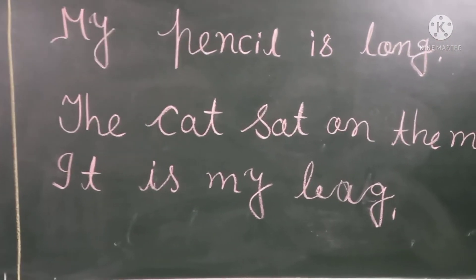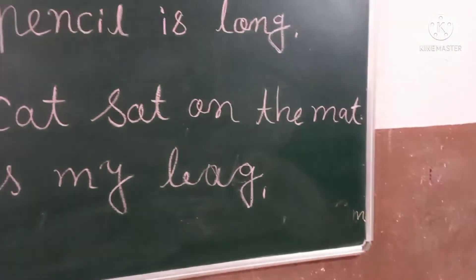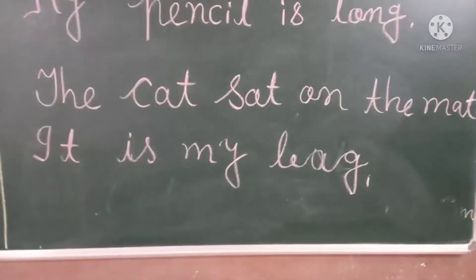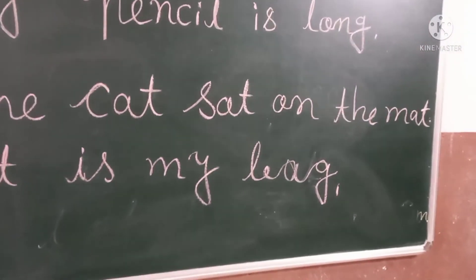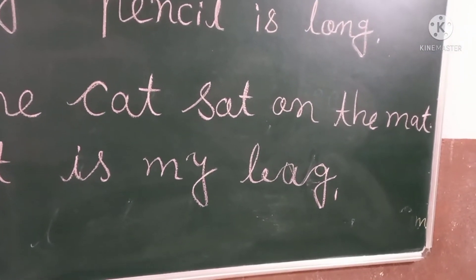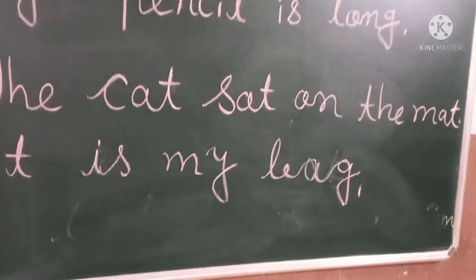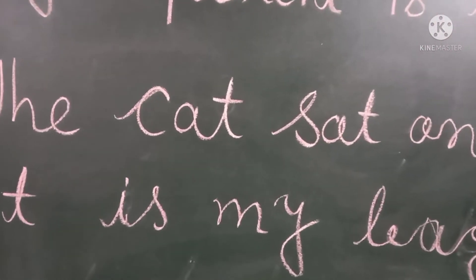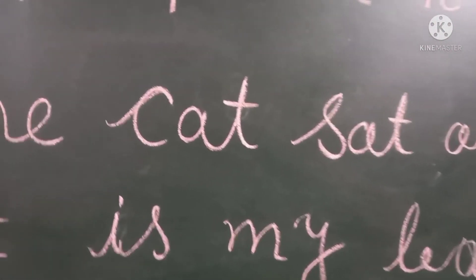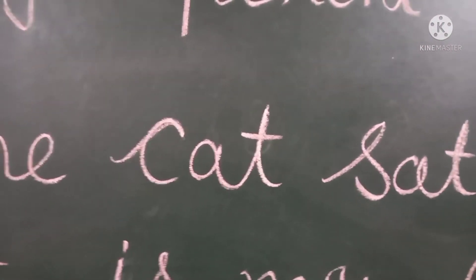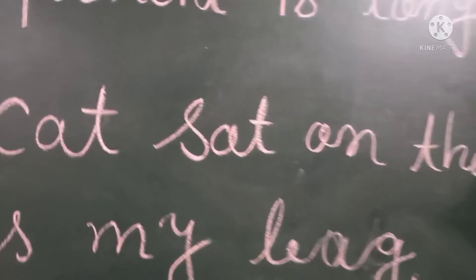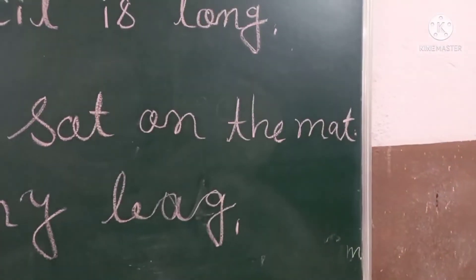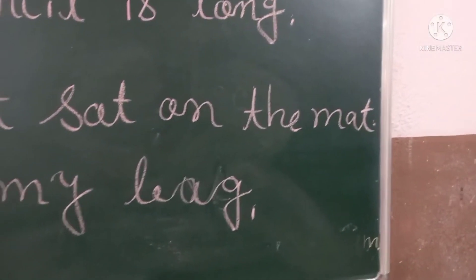Number six: the cat sat on the mat. Can you tell me how many CVC words are there? CVC means consonant, vowel, then consonant. C-A-T is cat, S-A-T is sat, and M-A-T is mat.